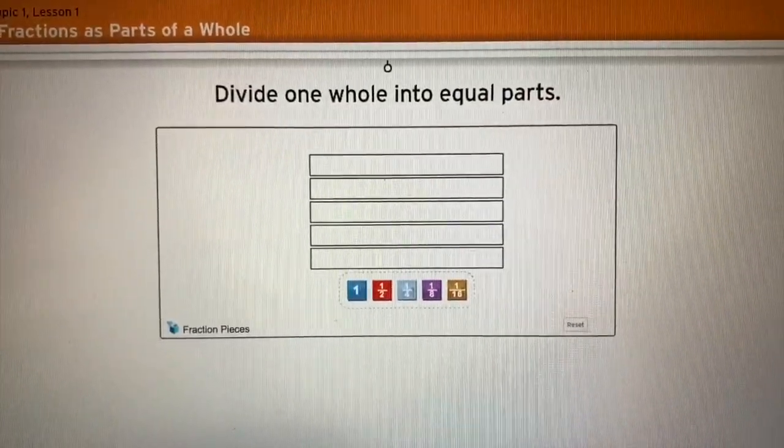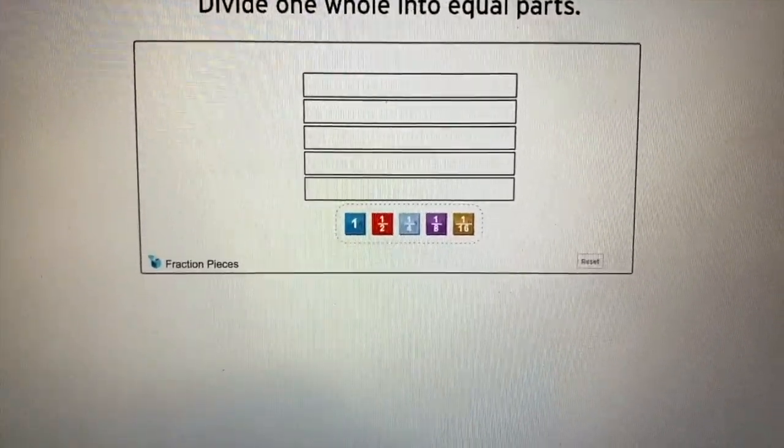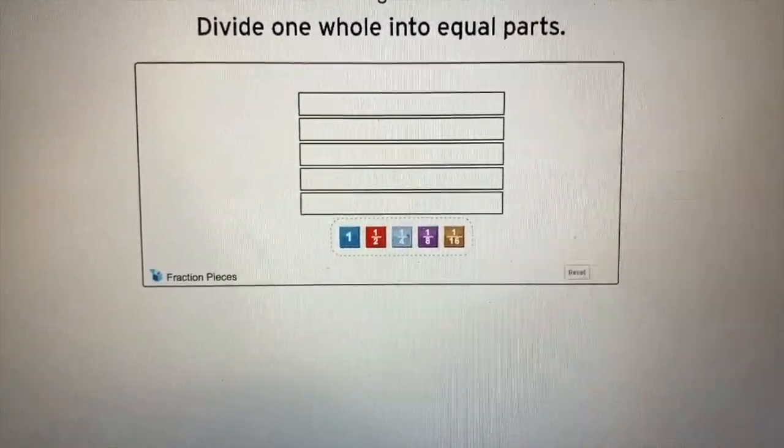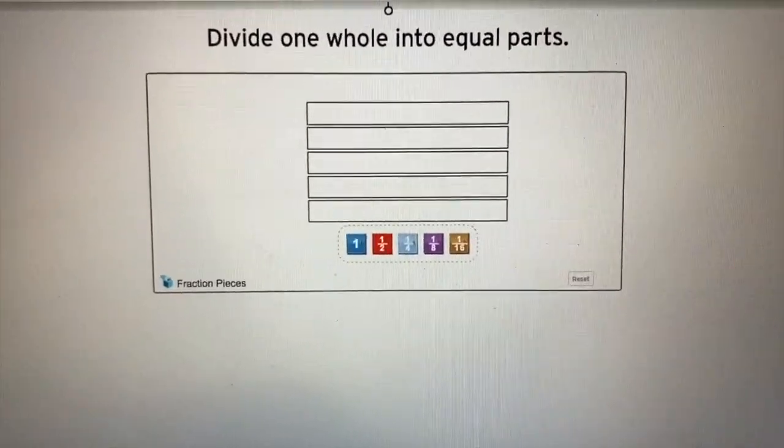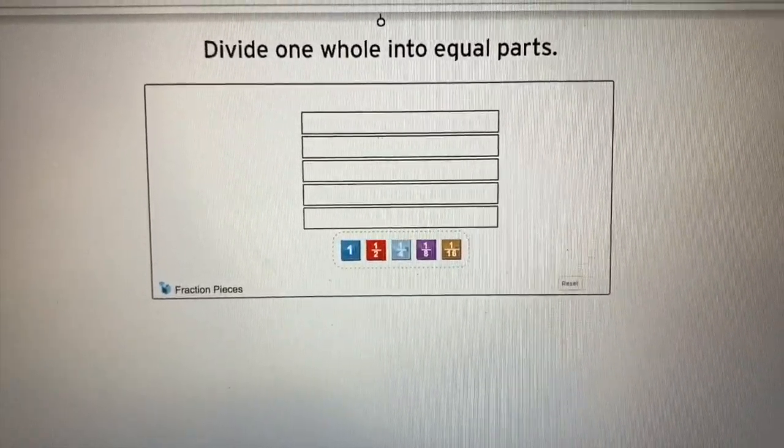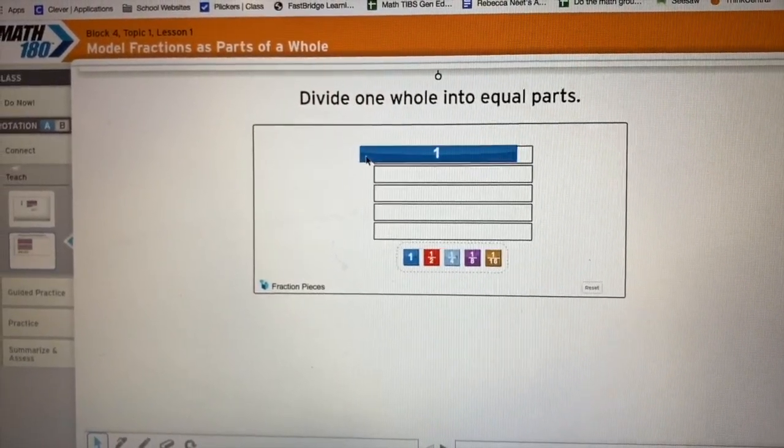As you can see from the tool here they want us to divide each of these wholes into equal parts. They give us various fractions down here to work with: one half, one fourth, one eighth, and one sixteenth. All of these numbers are multiples of two and therefore will create equivalent fractions. If I use the model I can create my whole.